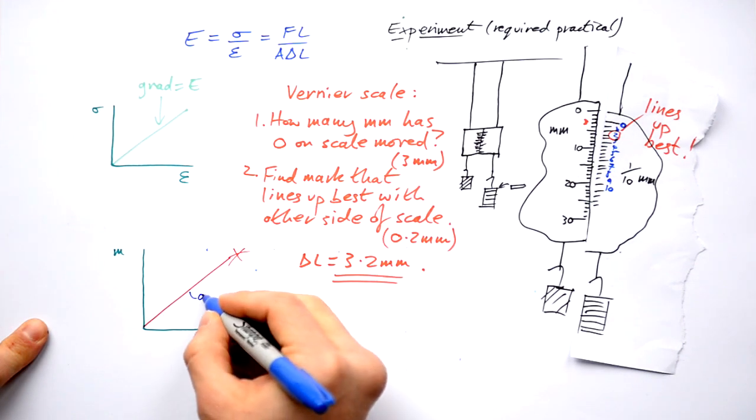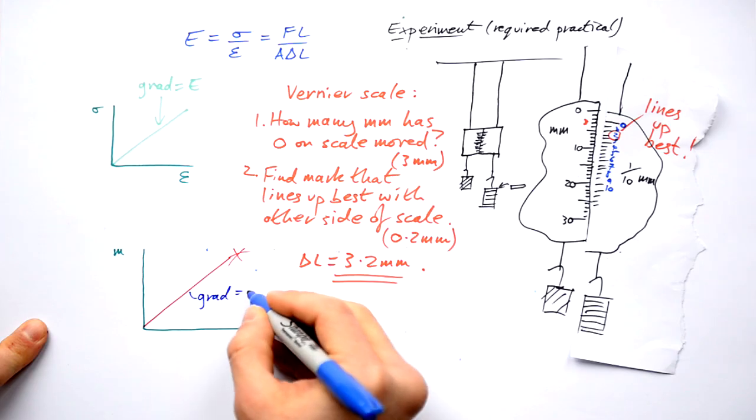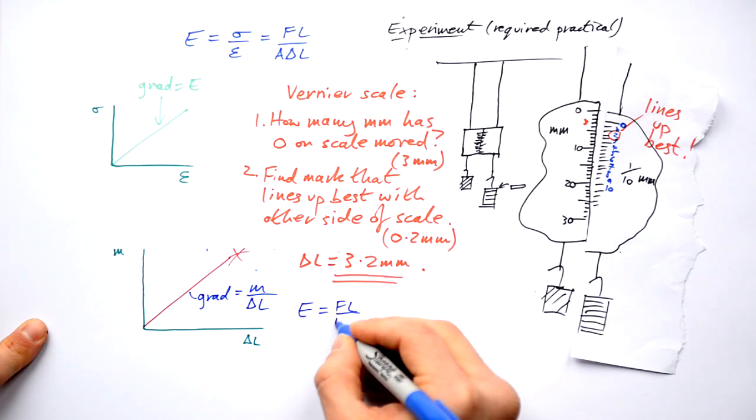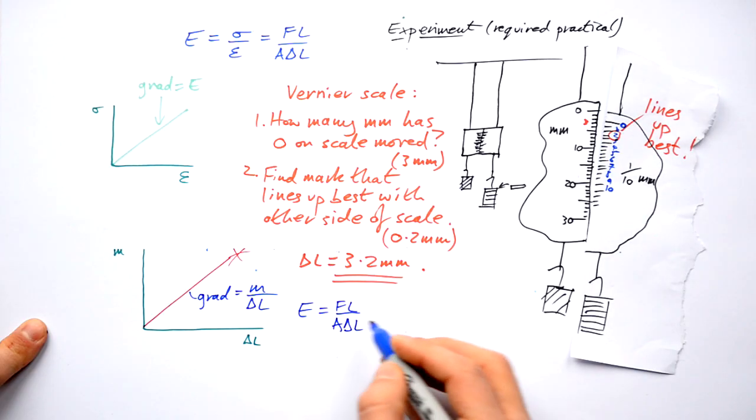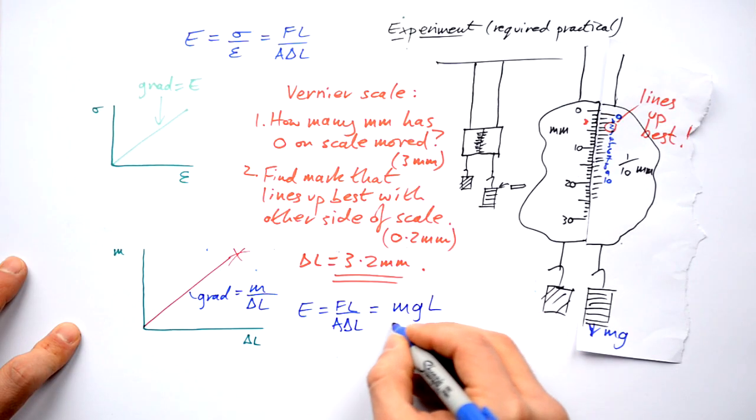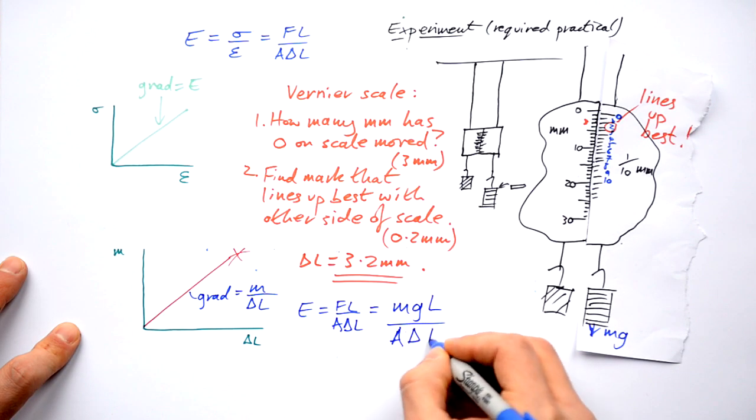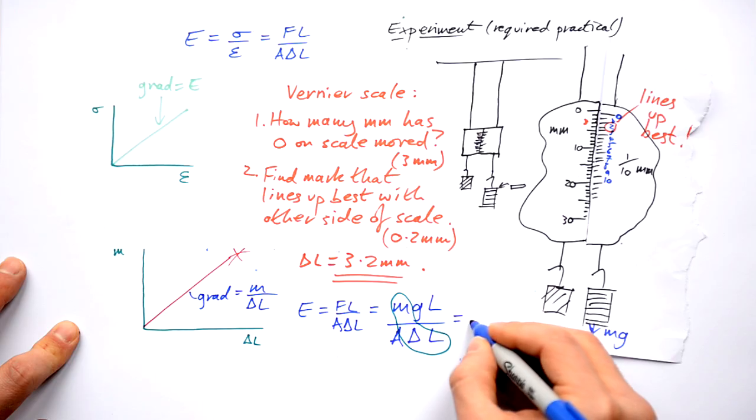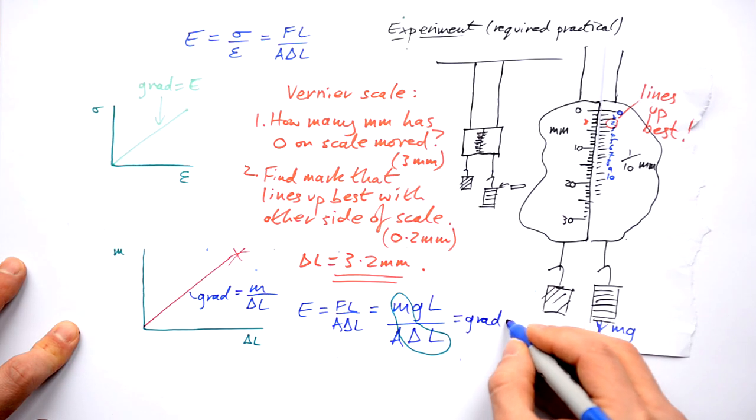How do we find out what's going on here? Well, we know that the gradient here equals the mass divided by the extension. So let's go back to our full Young's modulus equation. We have FL divided by A delta L. But we know that the force in this case is going to be MG. So that ends up being MGL divided by A delta L. What part of this equation gives us our gradient? It's this part here, M divided by delta L.